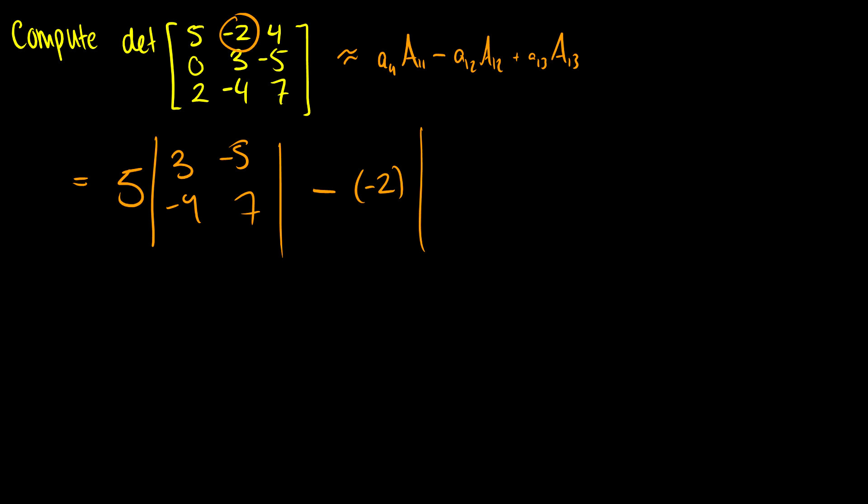And then we're going to subtract A12, which is negative 2 times the submatrix. So again, I take a look at this 2, I think, okay, everything below it and everything to the left and right, just ignore it. Okay, so I'll do that. Then we're left with 0, negative 5, 2 and 7. I'm going to add A13, which is 4 times, of course, the matrix ignoring the first row and the third column. So we're left with 0, 3, 2, negative 4.